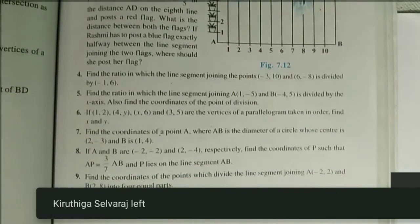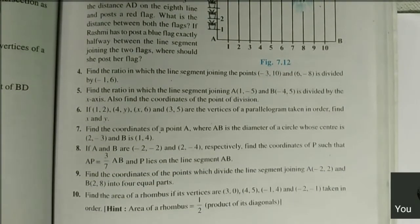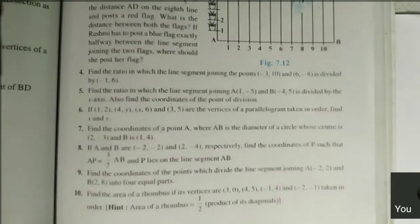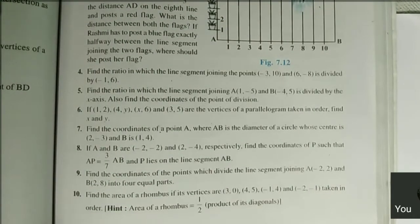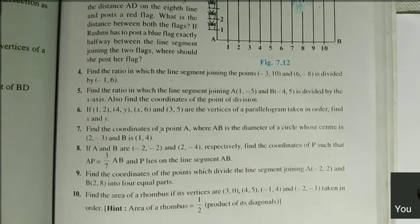Exercise number 7.2, seventh question. Find the coordinate of the point A, where AB is the diameter of a circle whose center is (2, -3) and B is (1, 4).